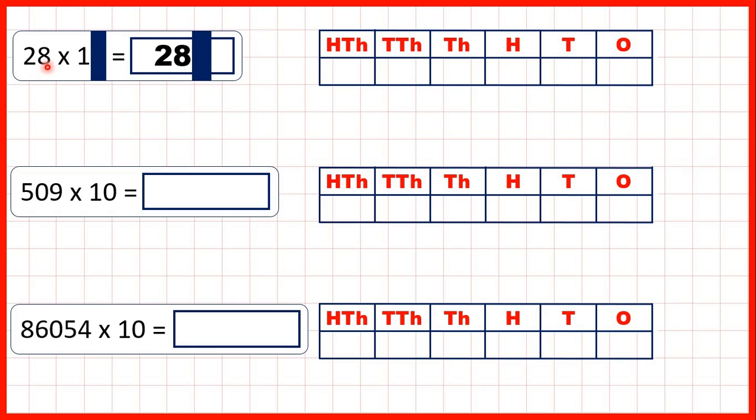That's because 28 times 1 is 28 and if there's a zero, an end zero in a multiplication question, there will be an end zero in the answer.